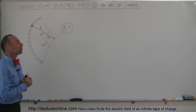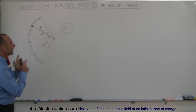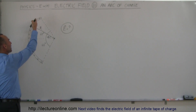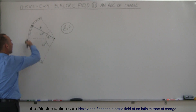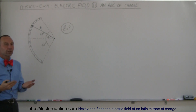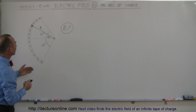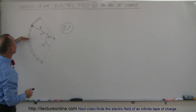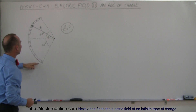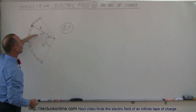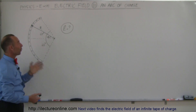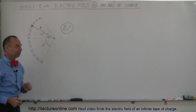Welcome to I Lecture Online. We're going to find the electric field of a piece of a circle that is charged by positive charge — we call that an arc of charge. In this particular case, the arc subtends a total angle of 120 degrees, so it's exactly one-third of a circle.